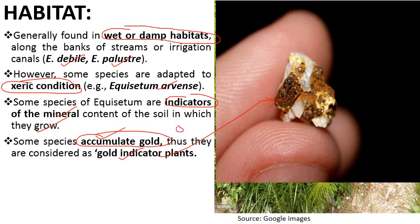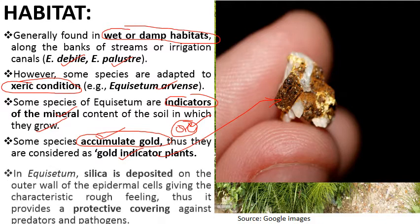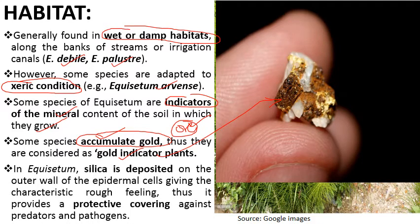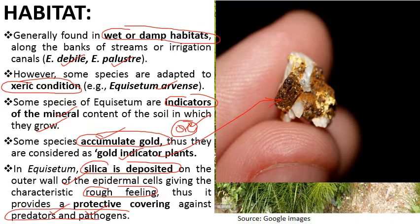In Equisetum, silica is deposited on the outer wall of the epidermal cells, giving a characteristic rough feeling, and provides protection against predators and pathogens. This silica deposition is protective in function.